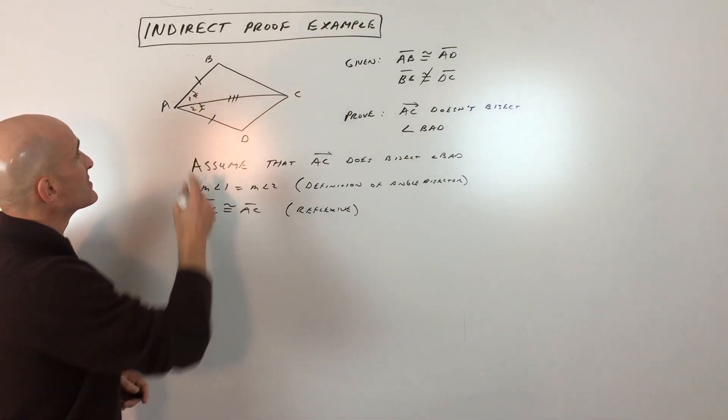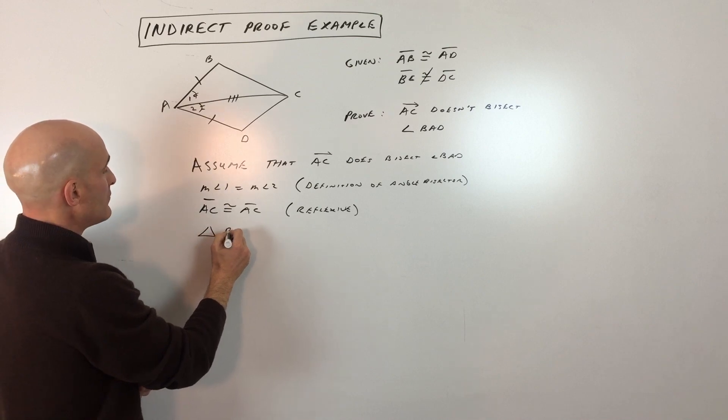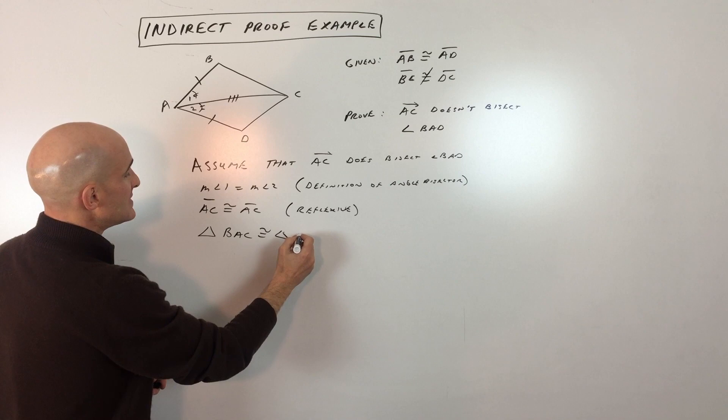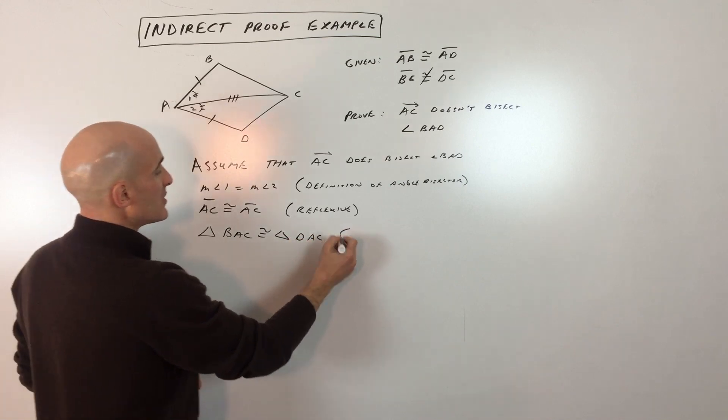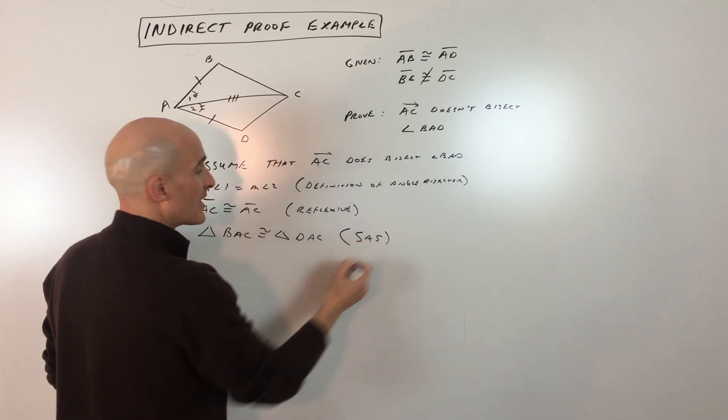What you notice here is that this triangle and this triangle are congruent. Triangle BAC is congruent to triangle DAC. The reason would be by side angle side.